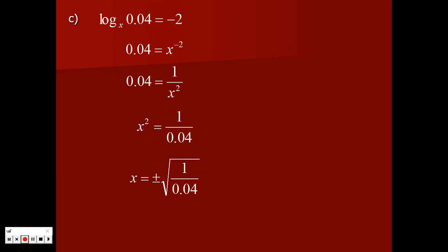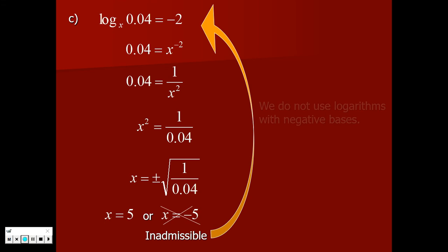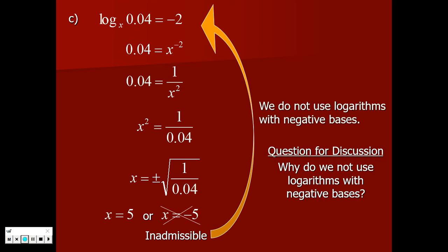Take the opposite of squared — plus or minus square root — and you get 5 and negative 5. The big question is: can we take log base 5 of 0.04? Yes, we can. Can we take log base negative 5? No — we don't use logarithms with negative bases. They're just unpredictable: when you put a negative number as the base and apply exponents, answers can go positive, negative, really go crazy. There are no good real-world applications of negative bases for exponential growth, so that answer is inadmissible.